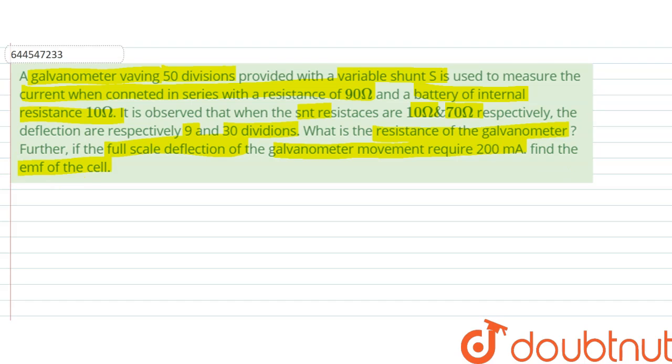The electric current through the galvanometer is proportional to the number of divisions or the deflection. Therefore, we can say that the current through the galvanometer Ig divided by I'g equals theta by theta dash, which equals 9 by 30, which equals 3 by 10.